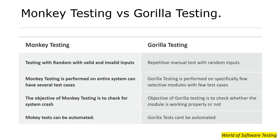Let's see some of the differences between monkey testing and gorilla testing. First, gorilla testing uses valid as well as invalid inputs and is a manual test performed on the same module hundreds of times. Monkey testing is performed on the entire system and can have several test cases, whereas gorilla testing is performed specifically on a few selective modules with a few test cases.